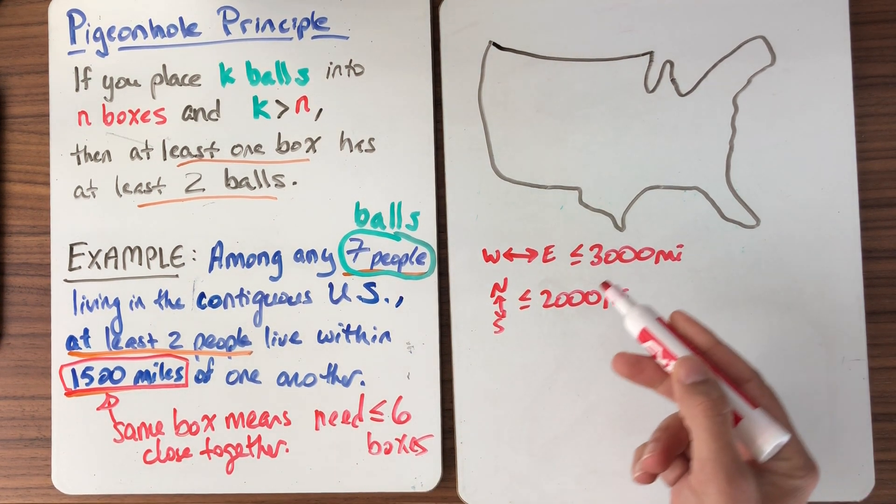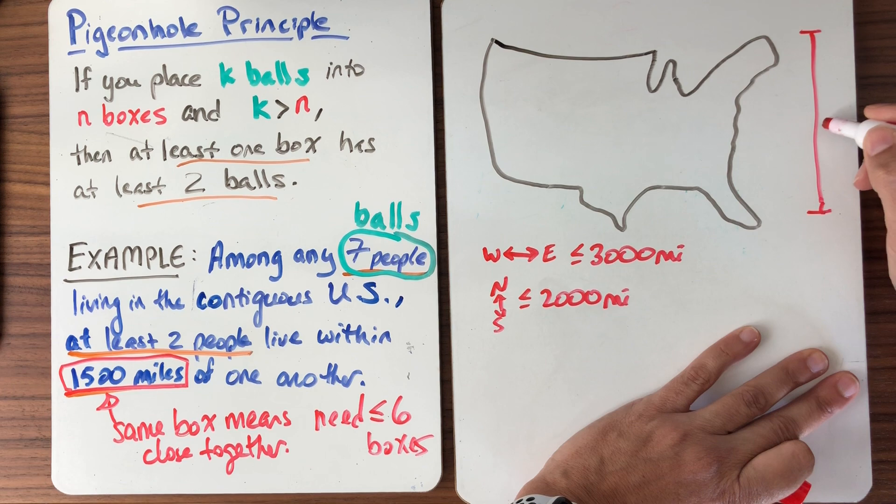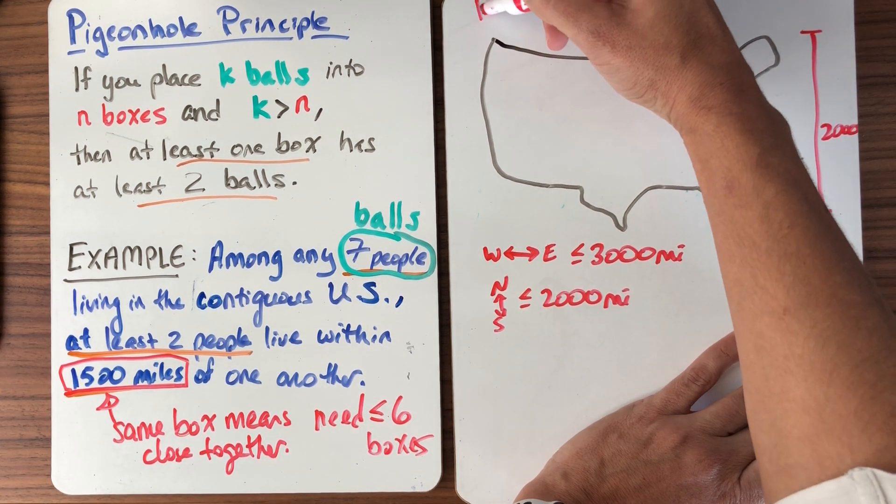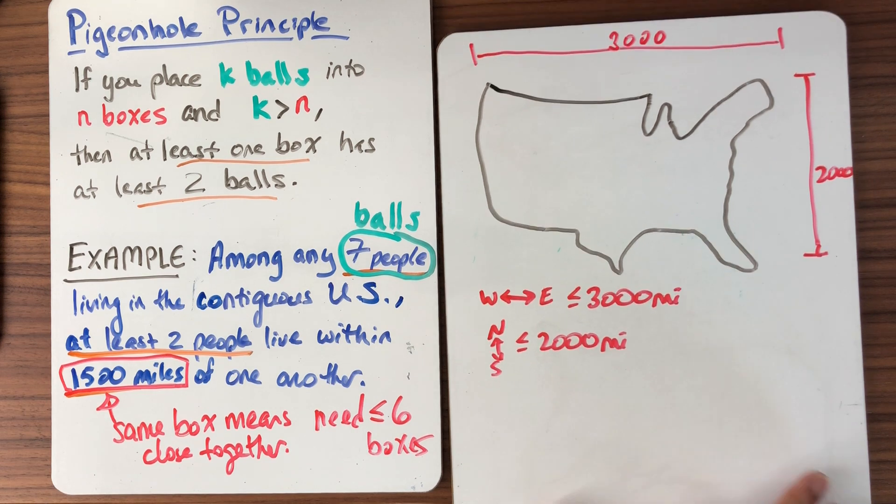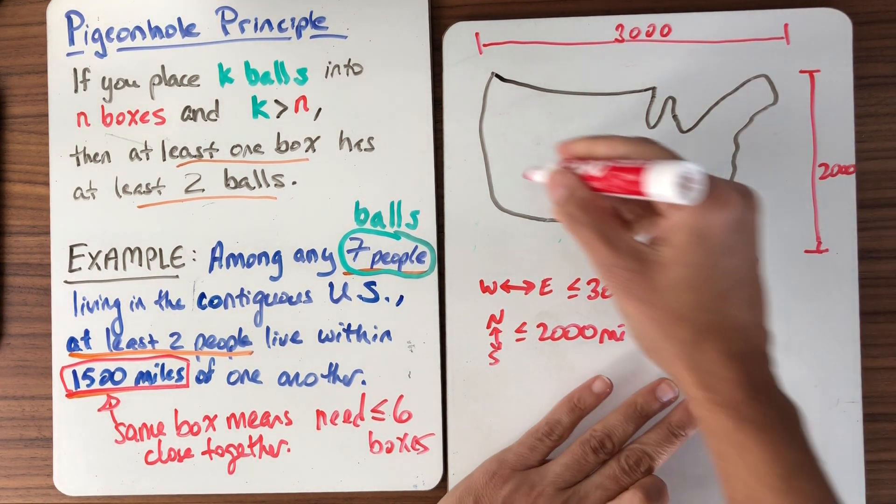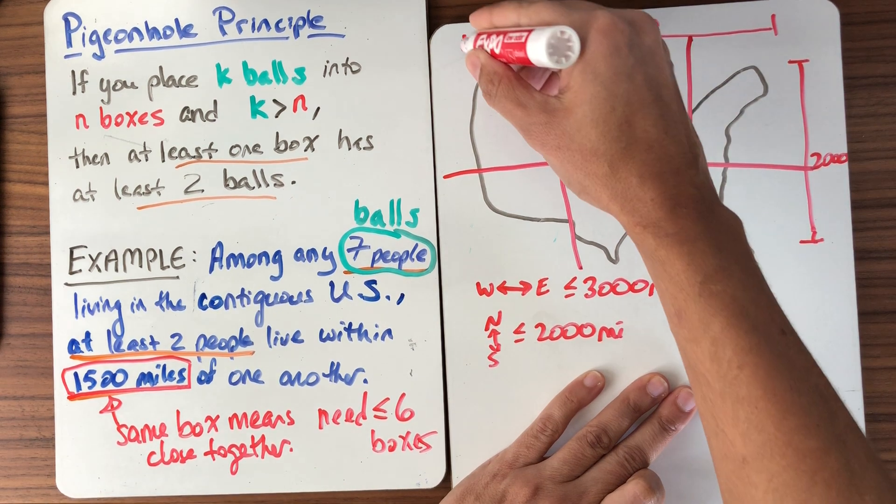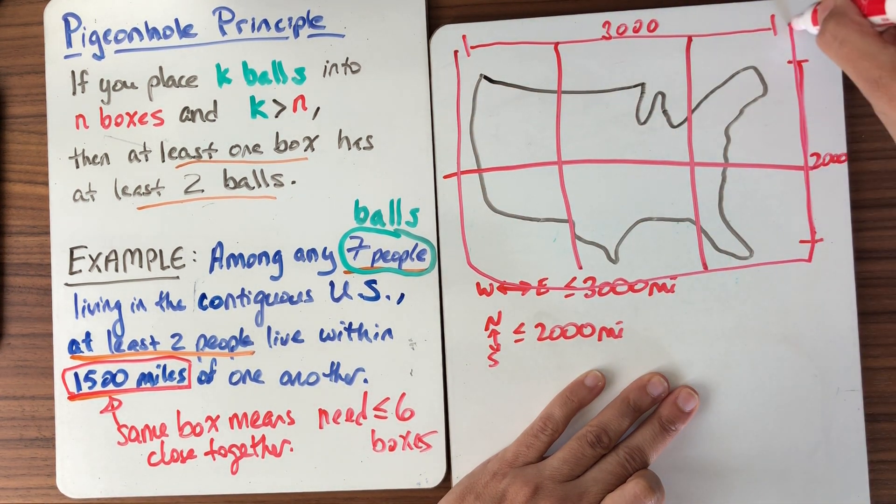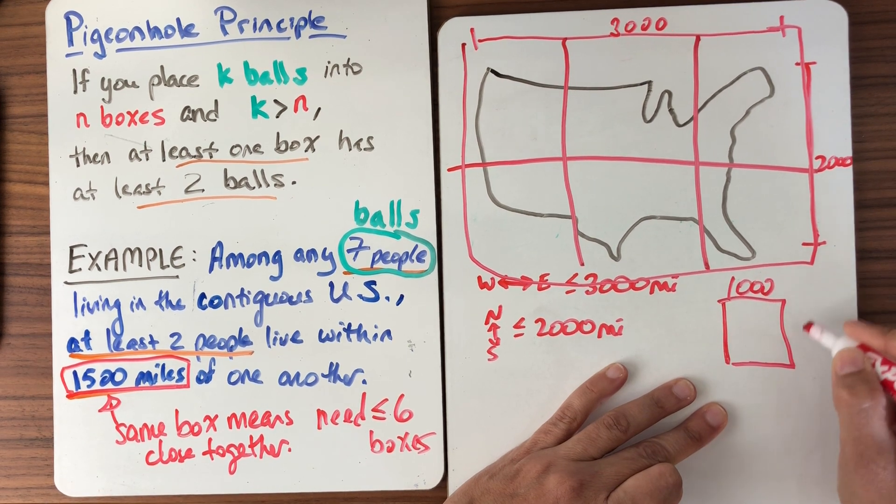So I could think about dividing the United States in this way. All the way down to Florida, this is 2,000 miles. And all the way across here, this is 3,000 miles. This is relevant information. It's relevant because I've got this 1,500 miles. So what I'm going to do is divide up the US into regions so that any two people in the same region live close together. Well, the obvious thing for me to do is to divide it. Just put a line here. And then I'll put three lines here. So I'll divide here and here. Now, I've got a three by two grid. Three times two is six. I've got six boxes. How big is each box? So each box like this is 1,000 miles by 1,000 miles.